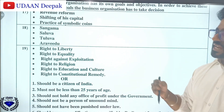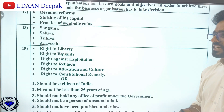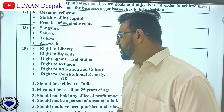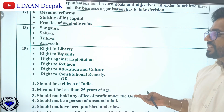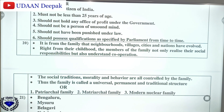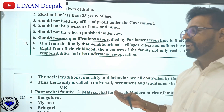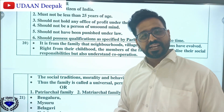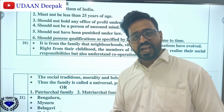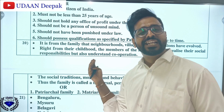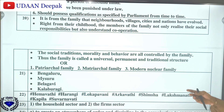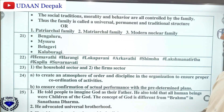Question number 19 covers the fundamental rights: right to liberty, right to equality, right against exploitation, right to religion, right to education and culture, and right to constitutional remedy. Then question number 20 you can see on screen — go through the answers thoroughly so you can answer effectively. Write point-wise in exam as well; it is a need in social science that everyone should follow the same pattern and write in points. The types of families are: patriarchal family, matriarchal family, and modern nuclear family.